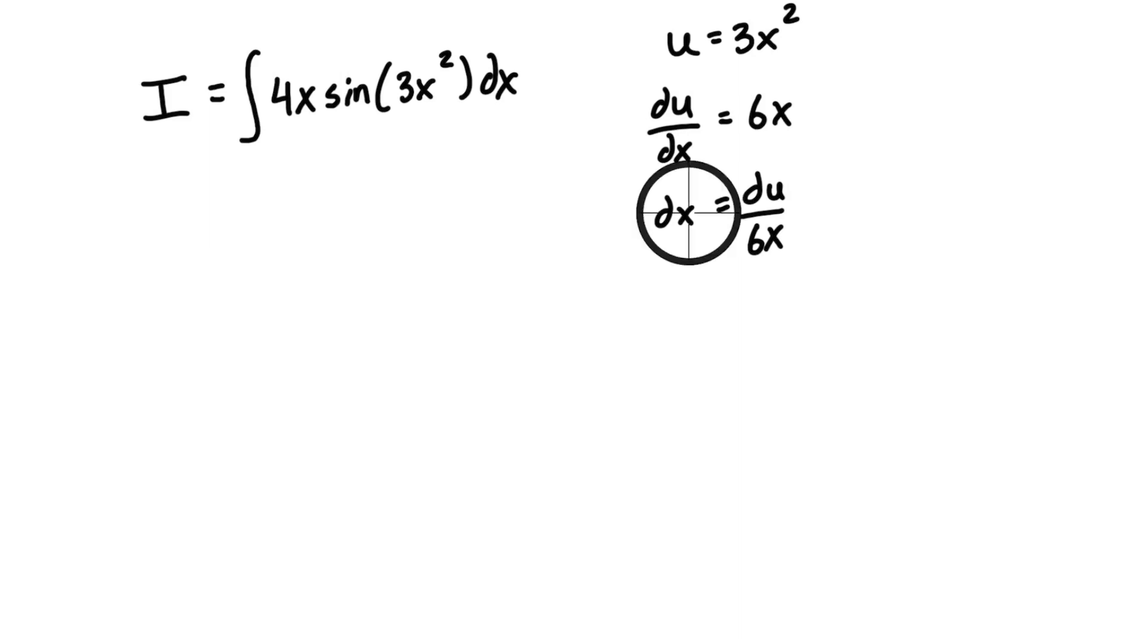Now what we're going to do is we're going to take u here and we're going to substitute it into this expression. So we're going to have the integral is equal to 4x sine of u dx. Okay, so this is where the u-substitution comes in. We're just calling this function, the one that we're substituting u. We're going to put it in here.